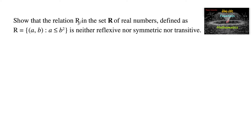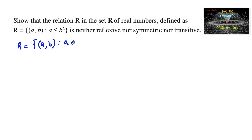Show that the relation R in the set of real numbers defined as R = {(a, b) | a ≤ b²}, where a and b are real numbers. Here, this is a set of real numbers and this is a relation.